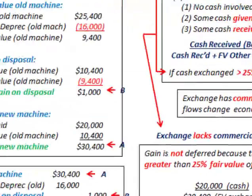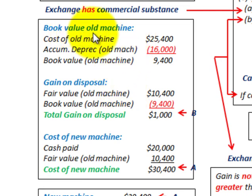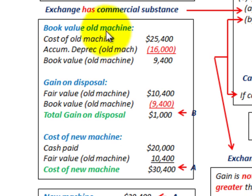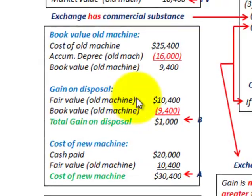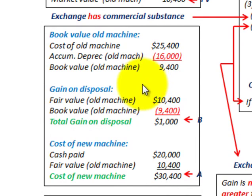To recap: the three items to calculate are the book value of the old machine, the gain on disposal, and the cost of the new machine. Using those calculations, you can then make your journal entries. That covers the problem where Corporation A purchased a new machine by trading in the old machine and paying some cash — or boot — on the trade-in.